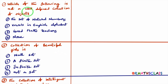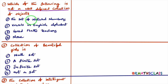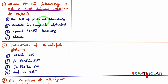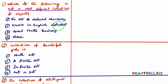Which of the following is not a well-defined collection of objects? Let's understand what they are asking — not a well-defined collection. Observe the first option: set of natural numbers. Natural numbers are well-defined. Everybody knows natural numbers means 1, 2, 3, 4, 5, 6 — no one will say minus 1, minus 2, minus 3. So natural numbers are well-defined. The second option: vowels in English alphabet. Vowels — A, E, I, O, U — everybody knows them, so they are also well-defined.